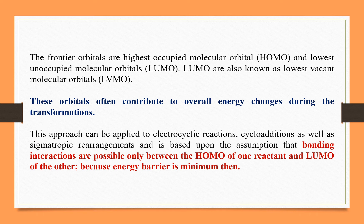These frontier orbitals often contribute to overall energy changes during transformations. The FMO approach can be applied to electrocyclic reactions, cycloaddition, as well as sigmatropic rearrangements. It is based on the assumption that bonding interactions are possible only between the HOMO of one reactant and the LUMO of the other, because the energy barrier is minimum in that case.